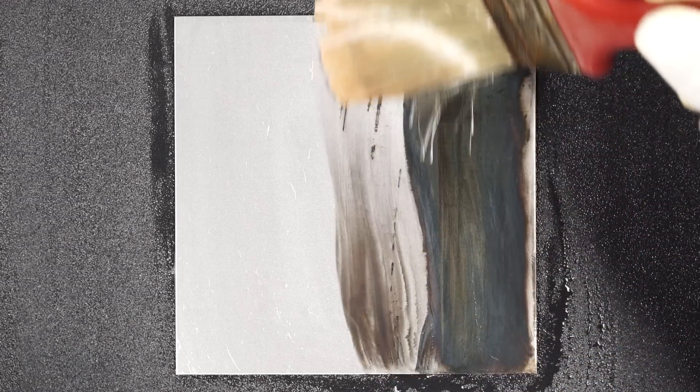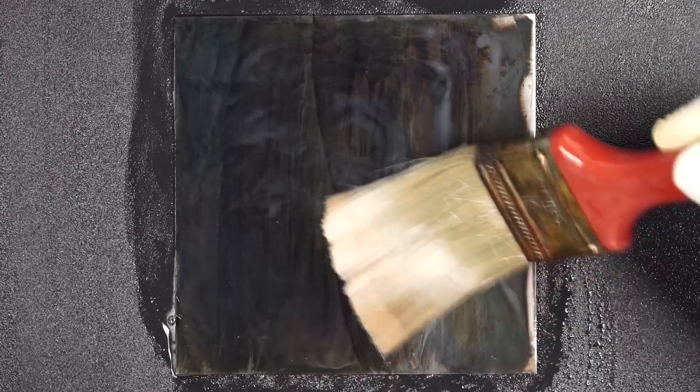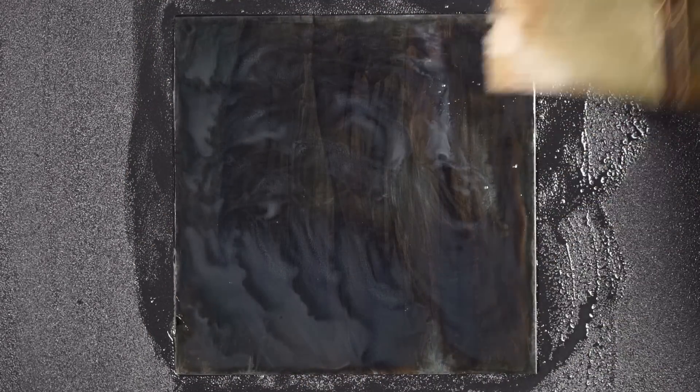Now that the part is cleaned, go ahead and apply the patina with a common paint brush. Just like the cleaning stage, make sure to get any corners, edges, and hard to reach areas to fully blacken the part.